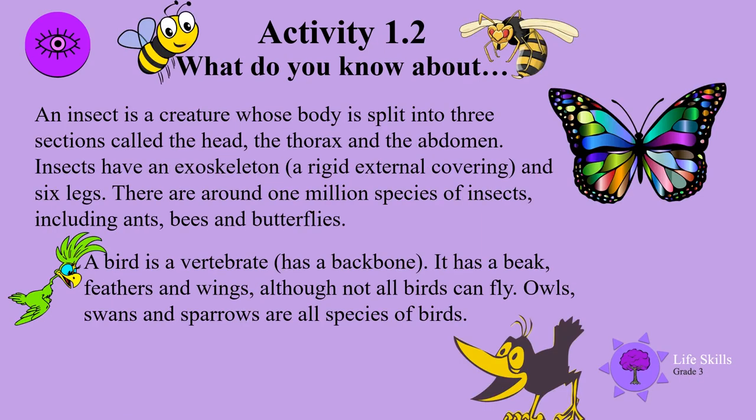An insect is a creature whose body is split into three sections called the head, the thorax and the abdomen. Insects have an exoskeleton, which is a rigid external covering, and six legs. There are around about one million species of insects, including ants, bees and butterflies.